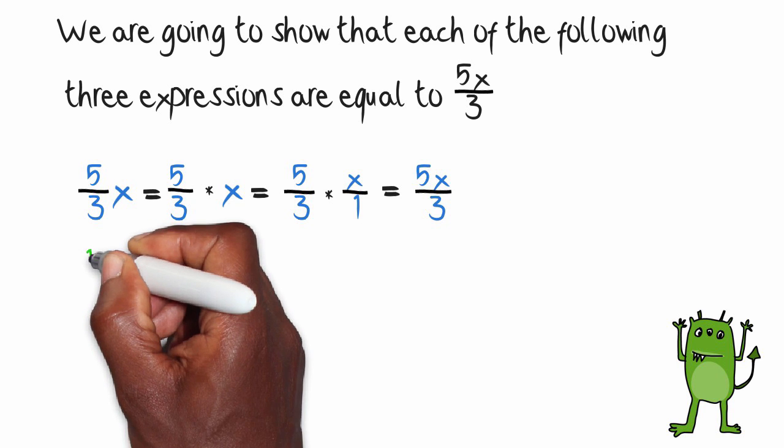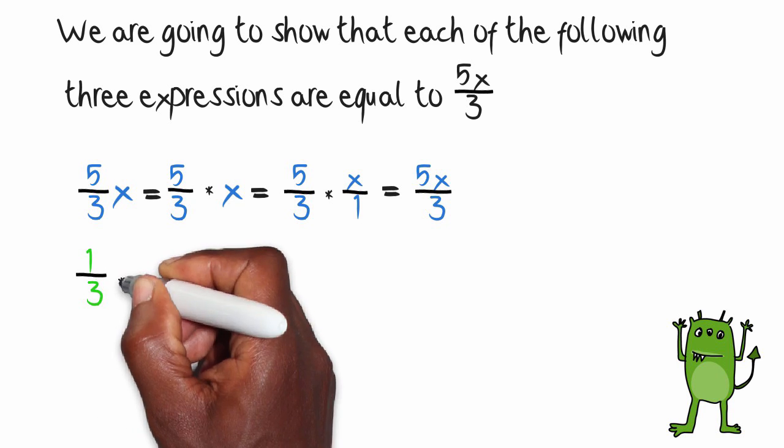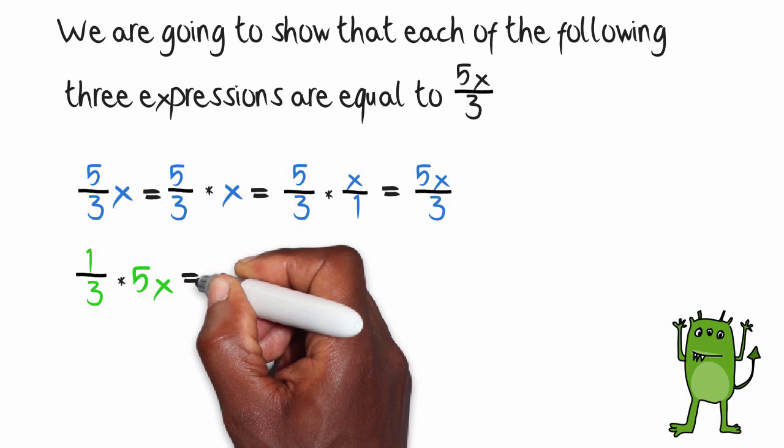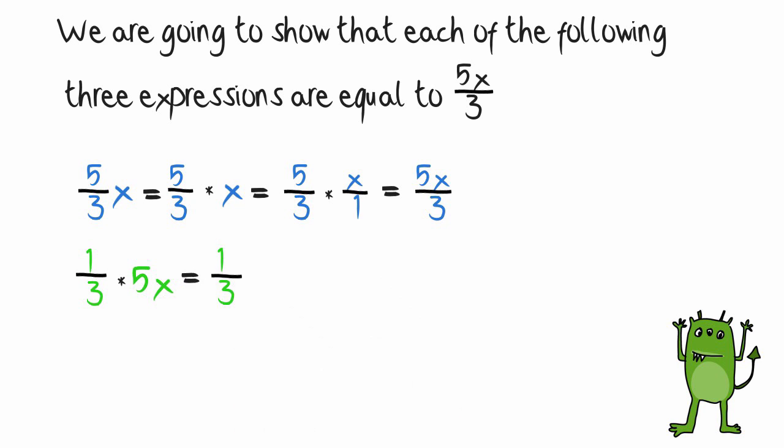Second expression we have, 1 third times 5x. Well, how do we multiply a fraction by an unknown number? Once again, we're going to turn that unknown number into a fraction.